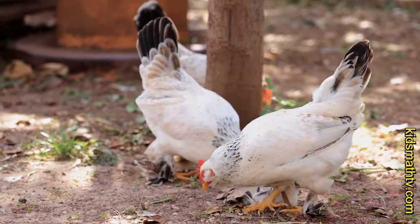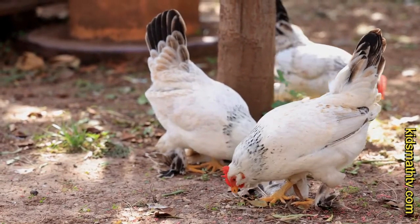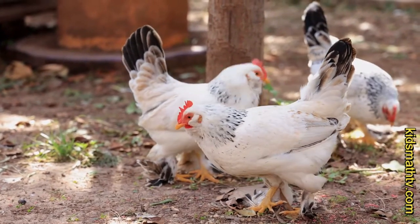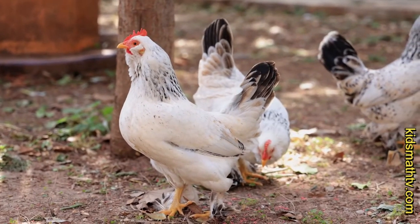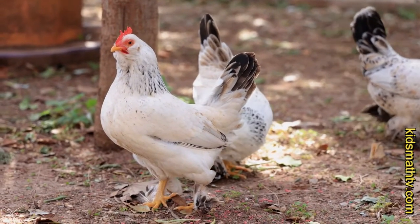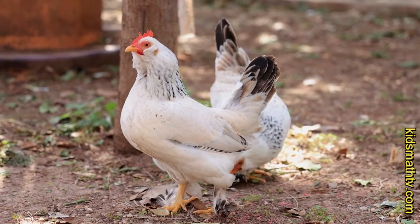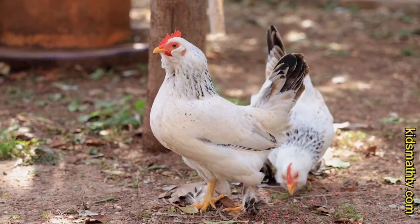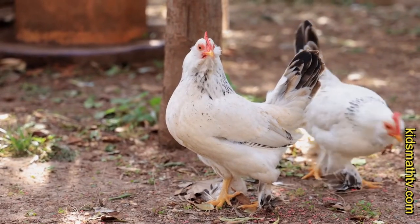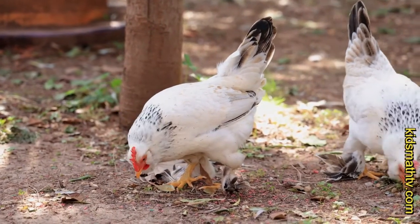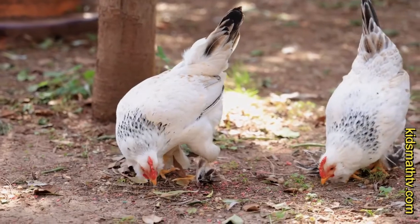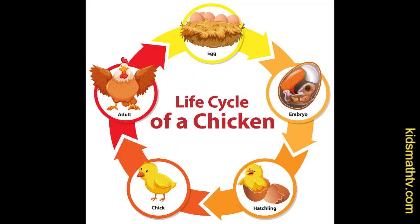Young hens are called pullets while their adult male counterparts are called roosters. As young as 18 weeks in some breeds, pullets can start to lay eggs, and they have this capability until about 72 weeks old. During this period, hens will once again mate with roosters and lay eggs to begin the cycle all over again. As females get older, they become wrinkled, dull-faced, and tend to lack the energy to move around vigorously as they used to. The same applies to roosters.